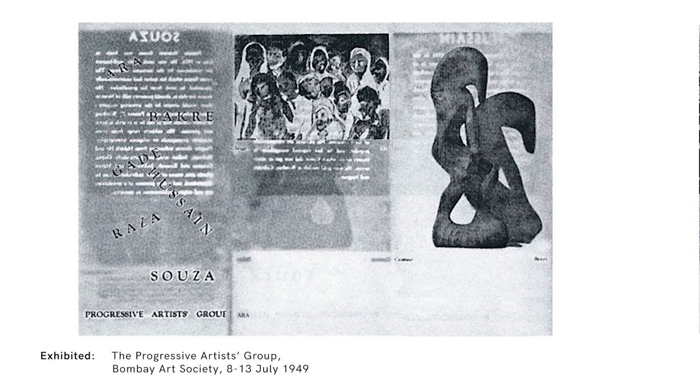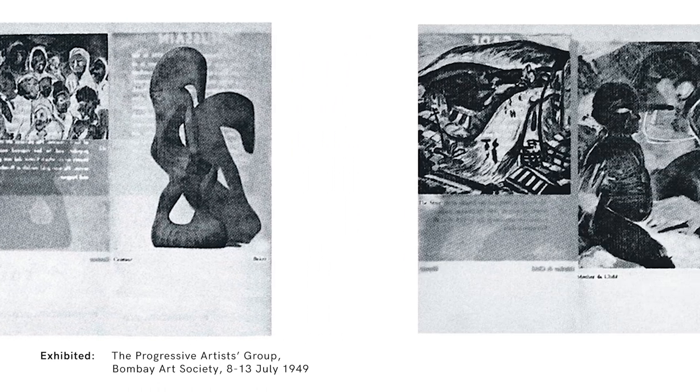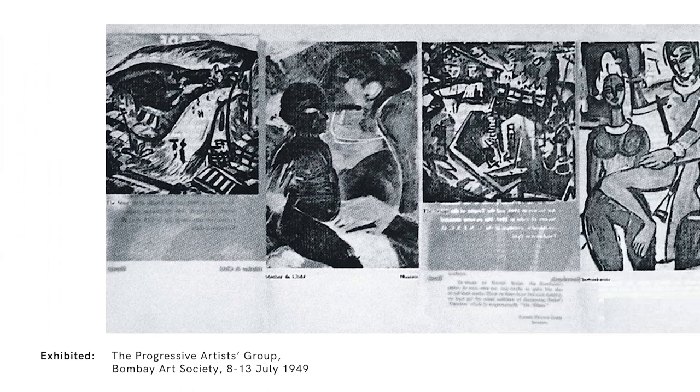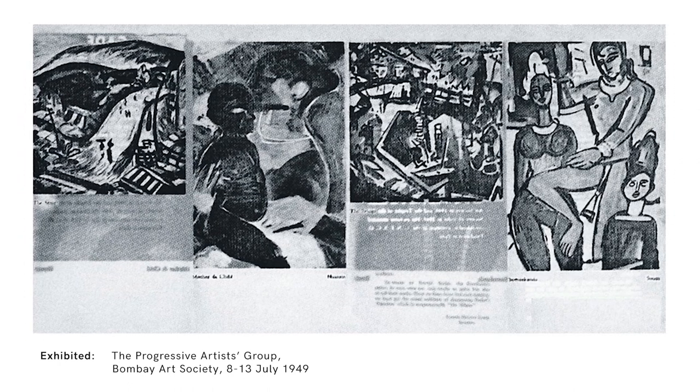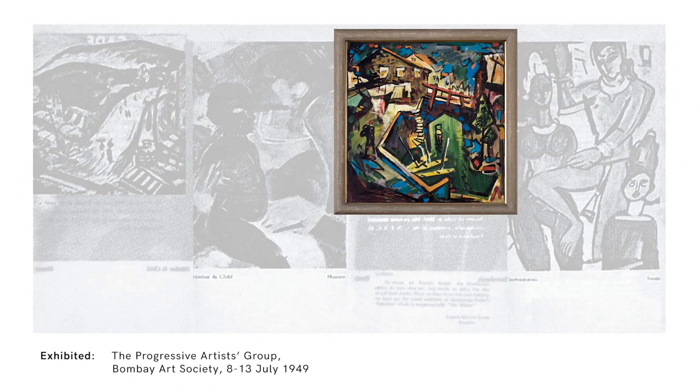The first major exhibition of the Progressives took place at the Bombay Arts Society in July 1949. The catalogue for that exhibition featured six images, one for each artist, and this work was chosen to represent Raza in that catalogue.